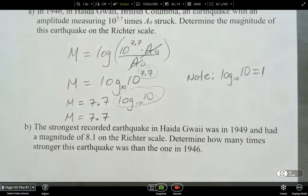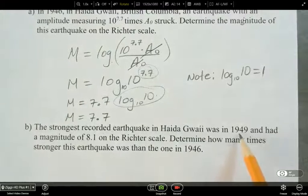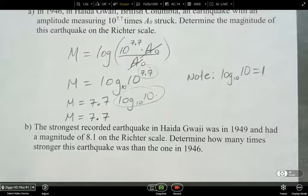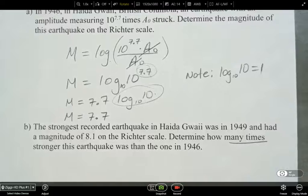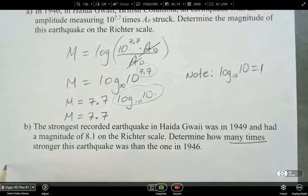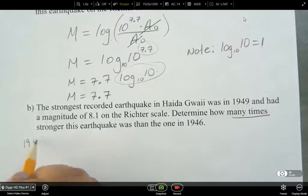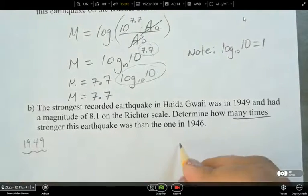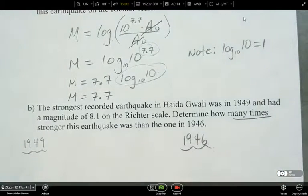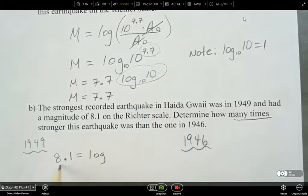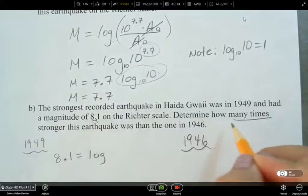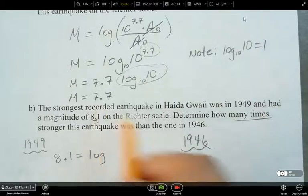So the strongest recorded earthquake in Haida Gwaii was in 1949 and had a magnitude of 8.1 on the Richter scale. Determine how many times stronger this earthquake was than the one in 1946. So we need to do a little comparison here. So we'll look at 1949 and then we're going to look at 1946. The magnitude on the 1949 one is 8.1, so that's M.